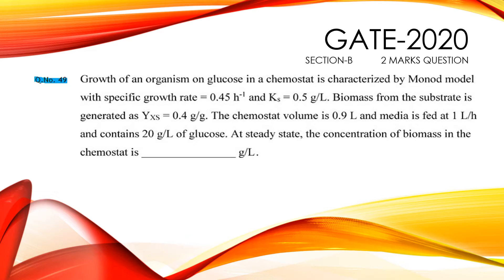Question 49. Growth of an organism on glucose in a chemostat is characterized by the Monod model with specific growth rate equals to 0.45 per hour and Ks equals to 0.5 g per liter.